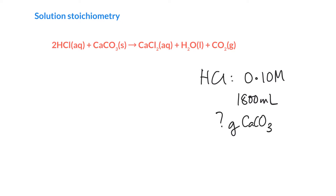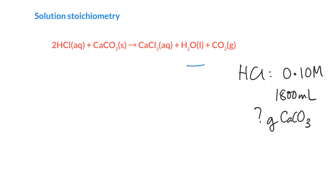Let's go ahead and start this. We set up this kind of problem by writing our moles directly underneath our chemical equation. Then on the line below, we write grams — or in this case, milliliters — to help us do this conversion.